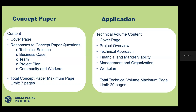The concept paper is due in February, with a page limit of about seven pages. The full application is not due until August of next year. There will be a huge emphasis on community benefits planning — a community benefit plan is required as part of the work plan. The more engagement you have with communities upfront, the stronger that community benefit plan can be.